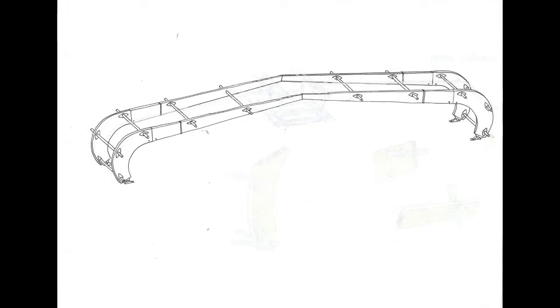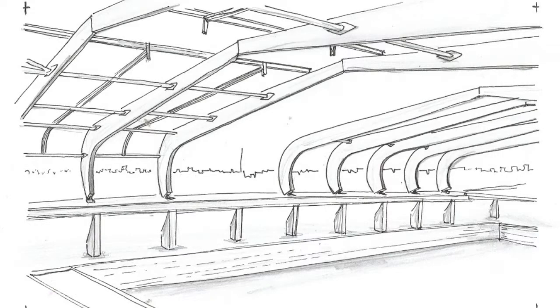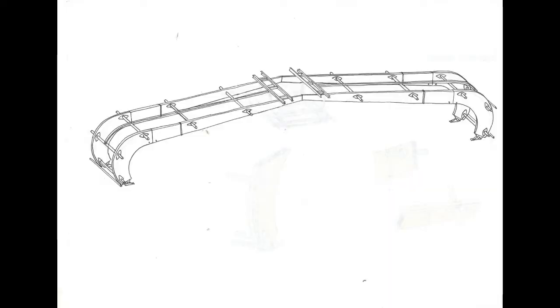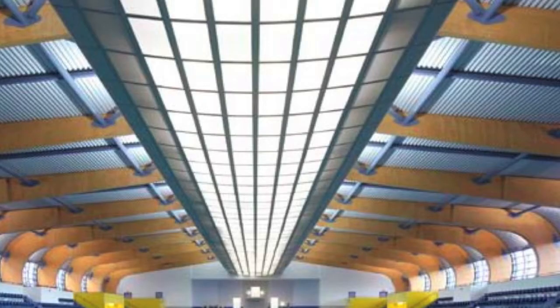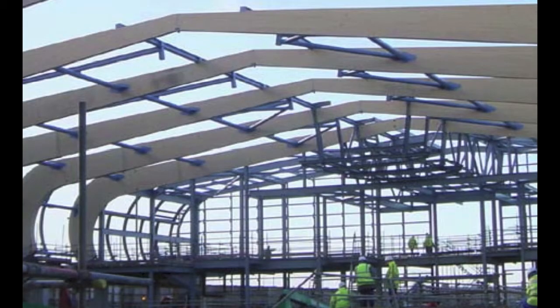Mientras estas viguetas se van llevando a cabo una por una, se comienza paralelamente la instalación del marco metálico, que va apoyado sobre las viguetas en madera y al tener esta totalmente listo, se sigue a la construcción de la estructura descolgada que permite posteriormente la entrada de luz cenital al centro acuático. Esta se llevó a cabo comenzando por los extremos, es decir, de la misma manera en que se llevó a cabo la construcción de las vigas en madera.